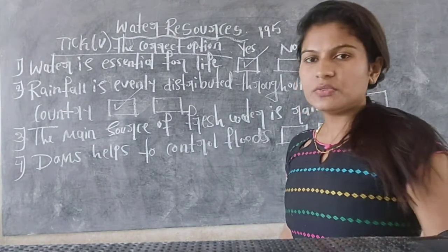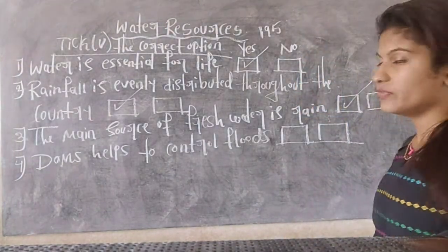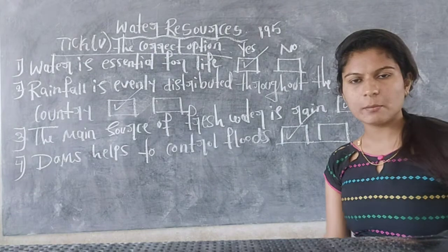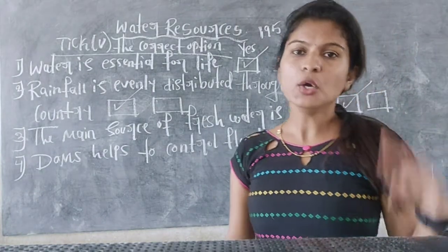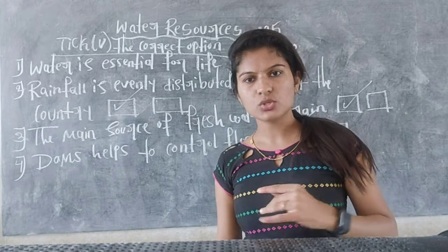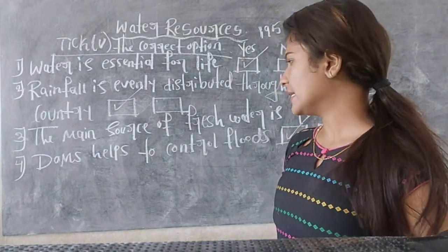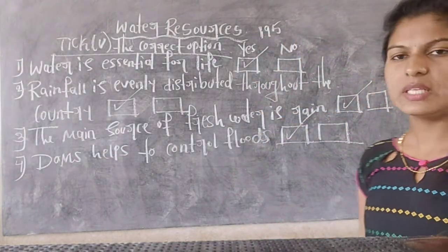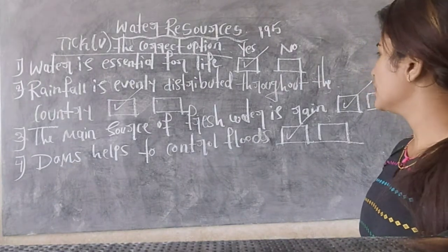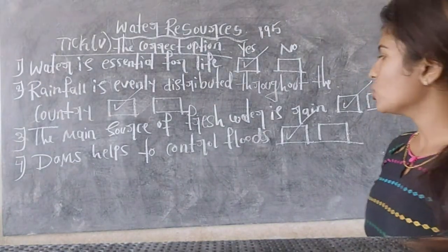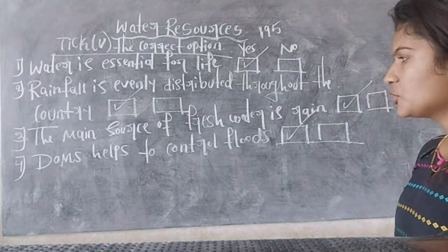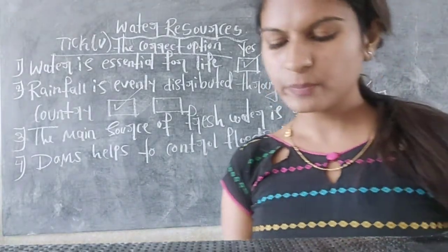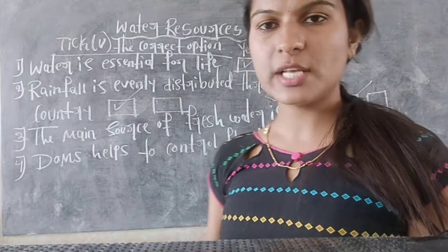Fourth and last one: dam helps to control flood. Yes, dam helps us to control the flood, because a dam is nothing but a big wall across the river which controls the force of the water. So these are the four answers — all four are yes: water is essential for life, rainfall is evenly distributed throughout the country, the main source of fresh water is rain, and dam helps to control floods.